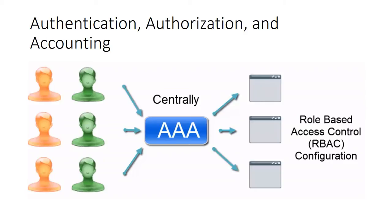Now let's look at the central AAA server where all usernames and passwords are stored on a central device. In this scenario, the configuration of the network devices and the maintenance of users is greatly simplified. Along with the username and password, authorization policies can be defined centrally and mapped to the server's RBAC configuration on the end device. If you need to change a username, password, or rights, it is as simple as one change on the central AAA server.